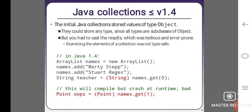Java collections: The initial Java collection stored values of type Object. They could store any type since all types are subclasses of Object, but you had to cast the results which was tedious and error prone. Examining the elements of a collection was not type safe.